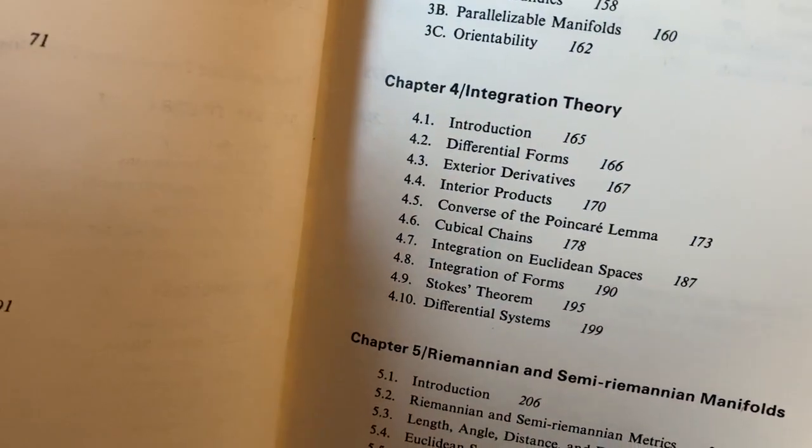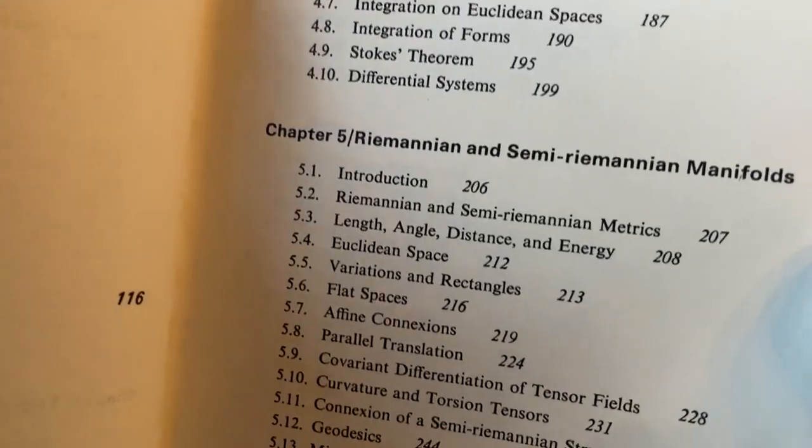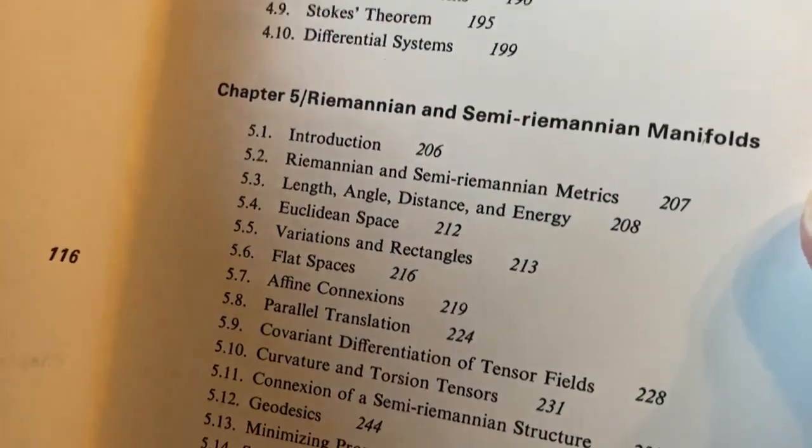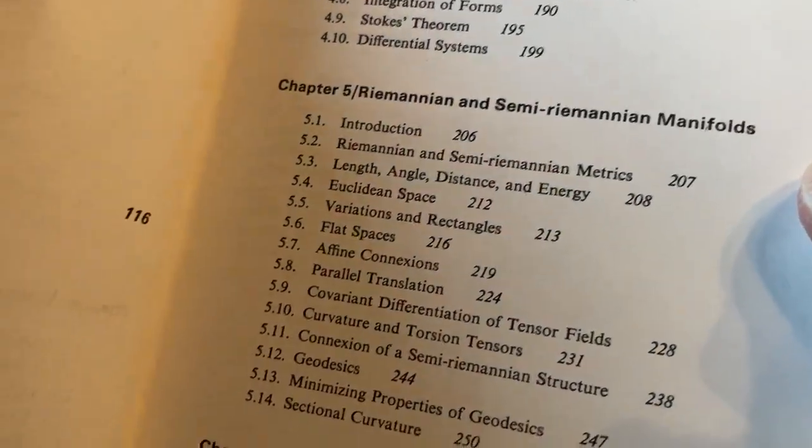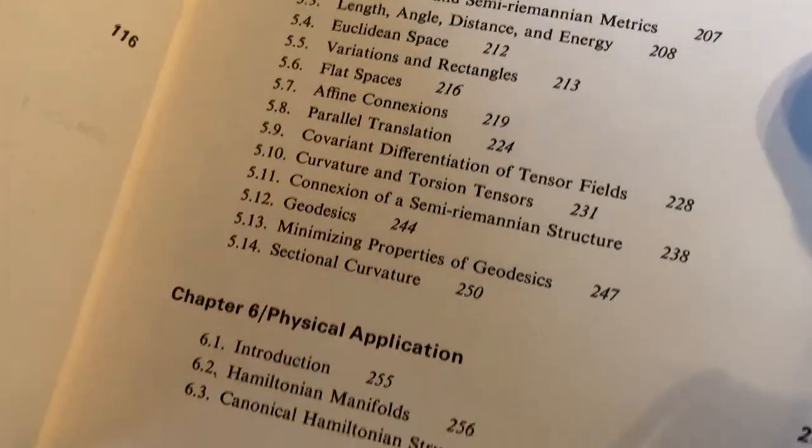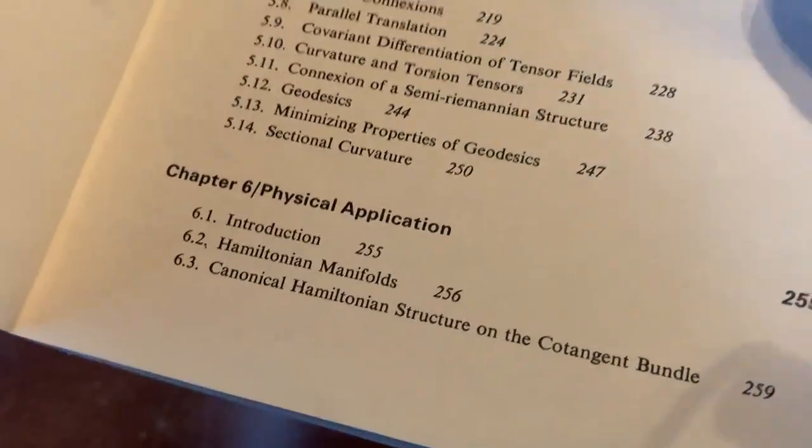Then we have Chapter 4, Integration Theory. Chapter 5, we've got some Riemannian and Semi-Riemannian manifolds. Physical Application, Chapter 6. And that's it. Then we have an index. So just an old school book.